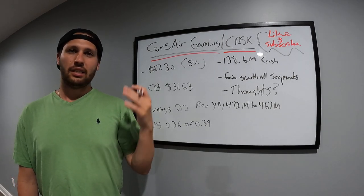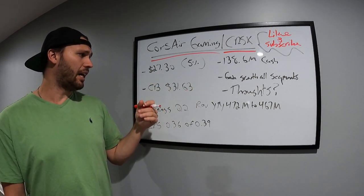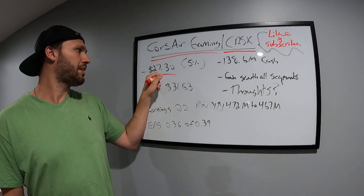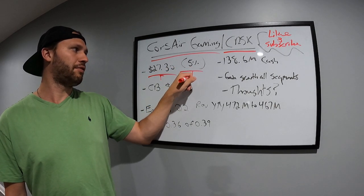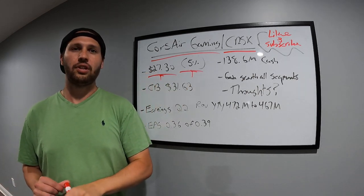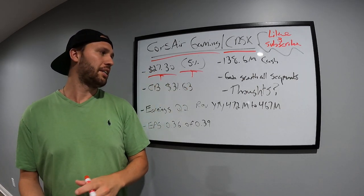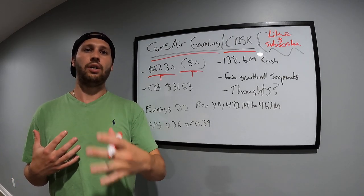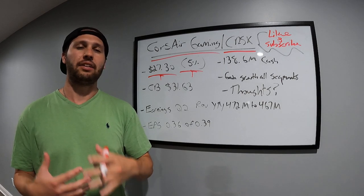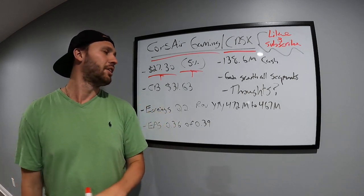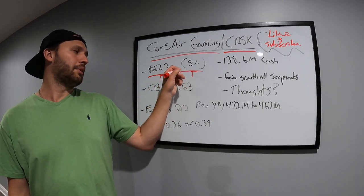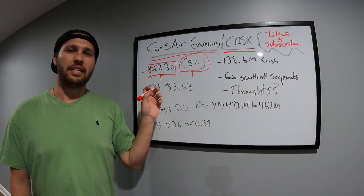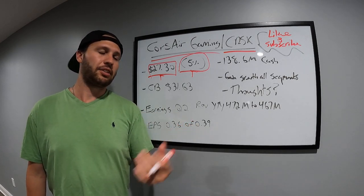So earnings came out yesterday. They missed on EPS but I'll get into that in this video. So it closed actually at $27.30. It had a 5% dip off this news. I think there's a lot of reasons why this is happening, but basically everything's priced to perfection and if there's even one little negative thing in the earnings, the stock's going to crash. So it went down 5% yesterday. This is the lowest the stock has been in probably almost a year at this point.